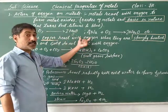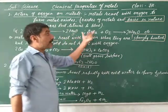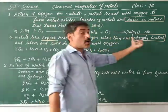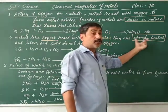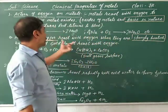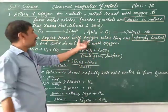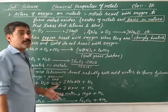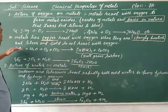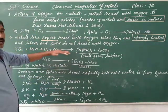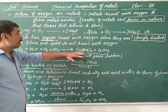When copper reacts with oxygen, it forms a layer of copper oxide and copper calcium carbonate on its surface.